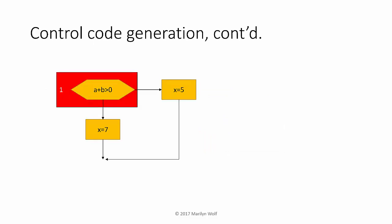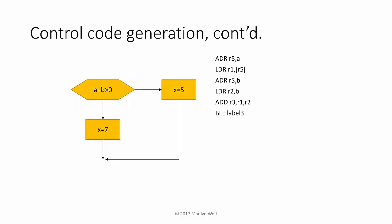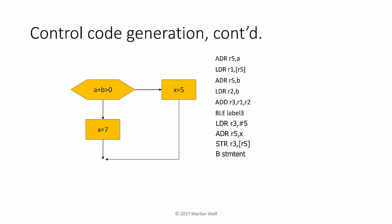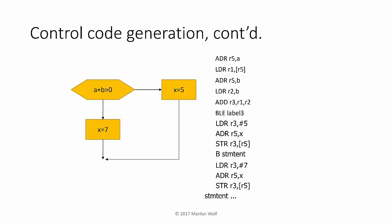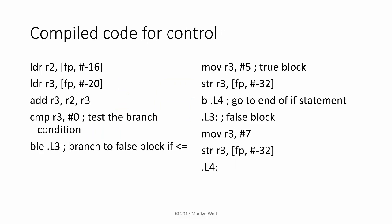We take the test and generate code that loads the variables, performs the test operation, and then a conditional branch. We need to generate code for one case of the branch. At the end of that we need to jump around the code we're going to generate for the other part of the branch. Here's the code for the other part, and then we can go on to execute other statements. Once again, here is code generated by a compiler for this statement, which uses the frame pointer to hold variables.